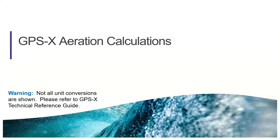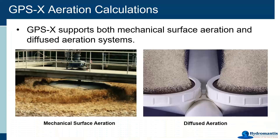What I want to do is go through our aeration calculations as quickly and easily as possible. I've taken out all the parts where we're dividing by 24 to go from hours to days and converting units — I'm just throwing up the parameters and the calculations that are happening. If you want to see the actual equations with all the unit conversions, please go to the technical reference guide. At the beginning of the section on activated sludge, you'll see all of the details. GPSX supports both mechanical surface aeration and diffused aeration systems. Our diffused aeration covers both coarse bubble and fine bubble edge aeration, and there's even an option for you to specify a user-defined diffused air system where you can make some changes.